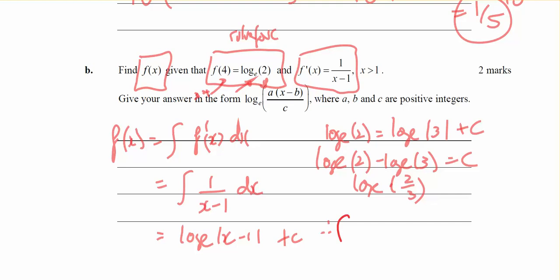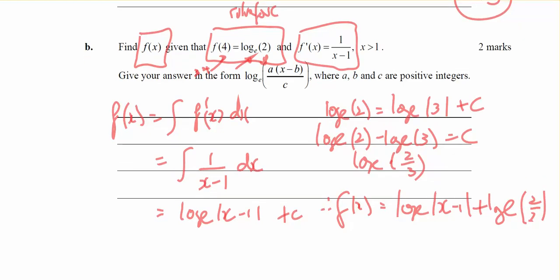Therefore my final answer, f(x), will equal log base c of (x - 1), plus log base c of 2 thirds. And you could combine that together to give you the 1 logarithm of (x - 1) times 2 divided by 3.